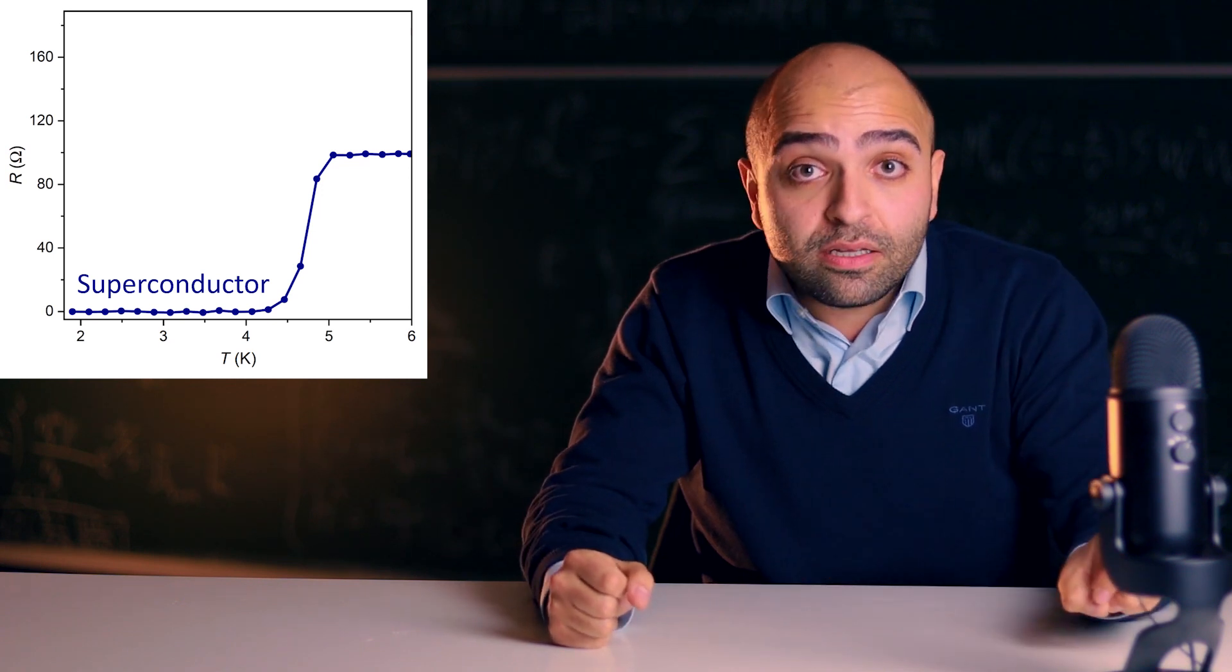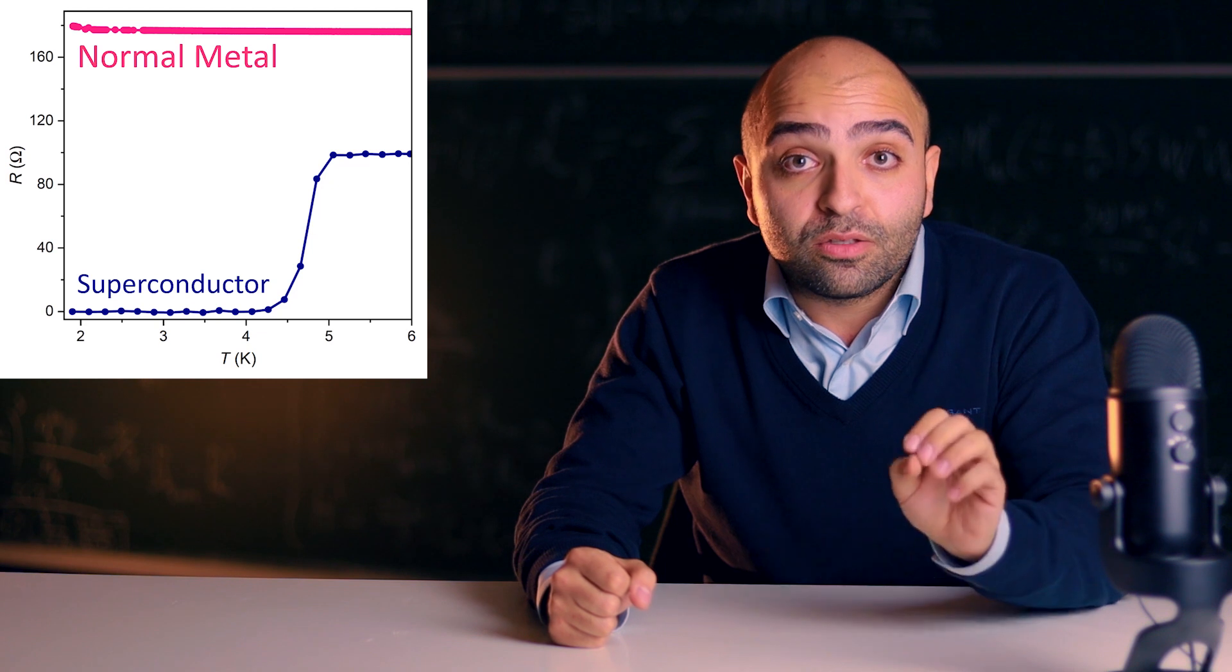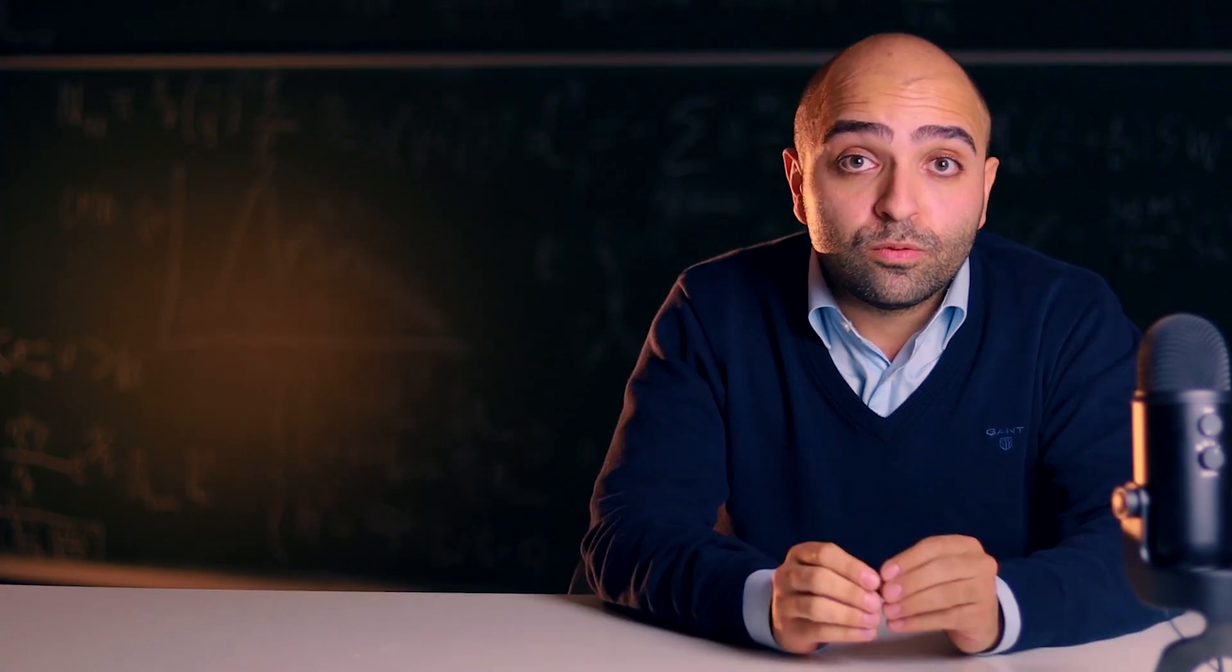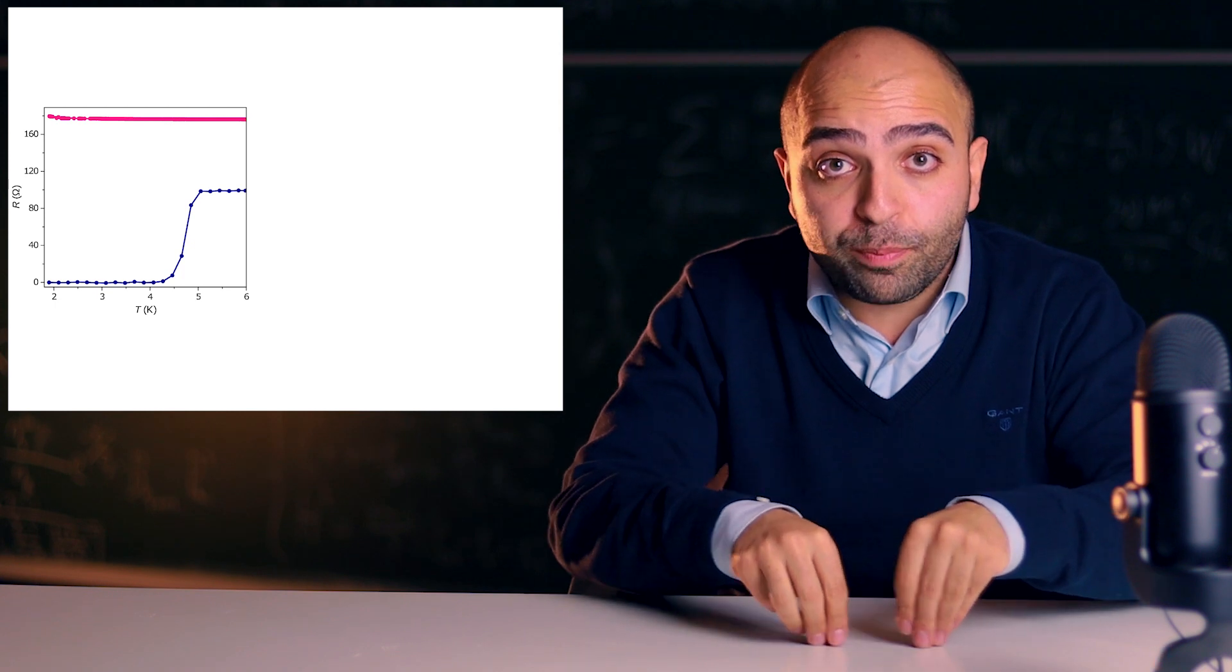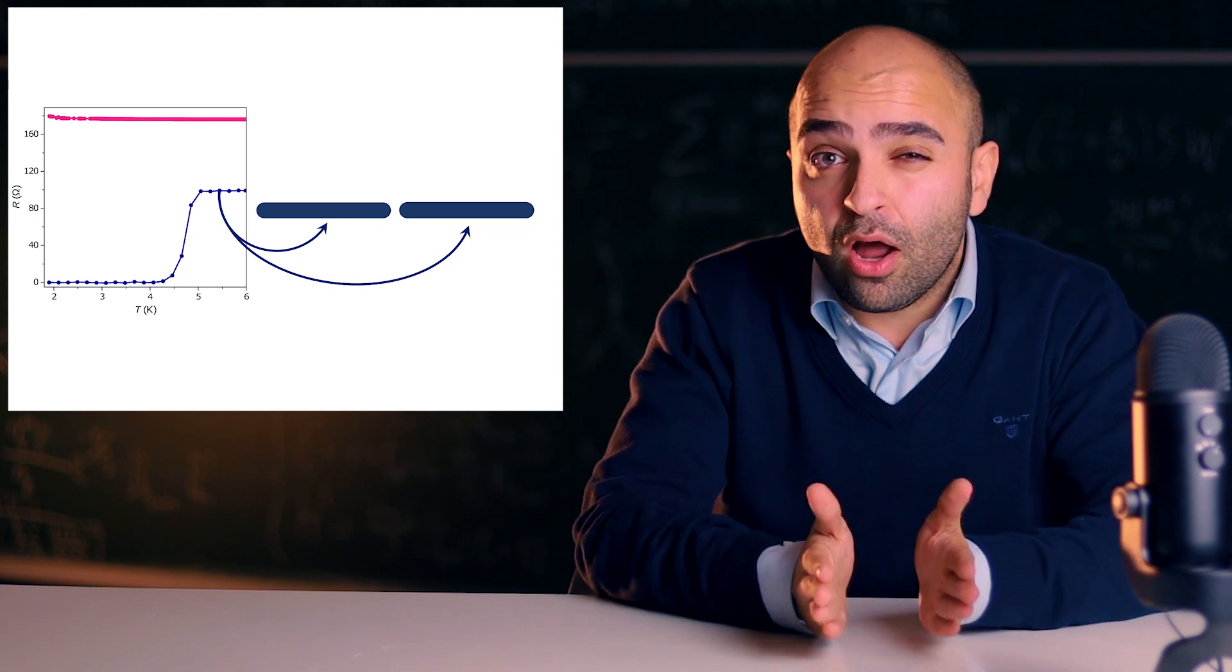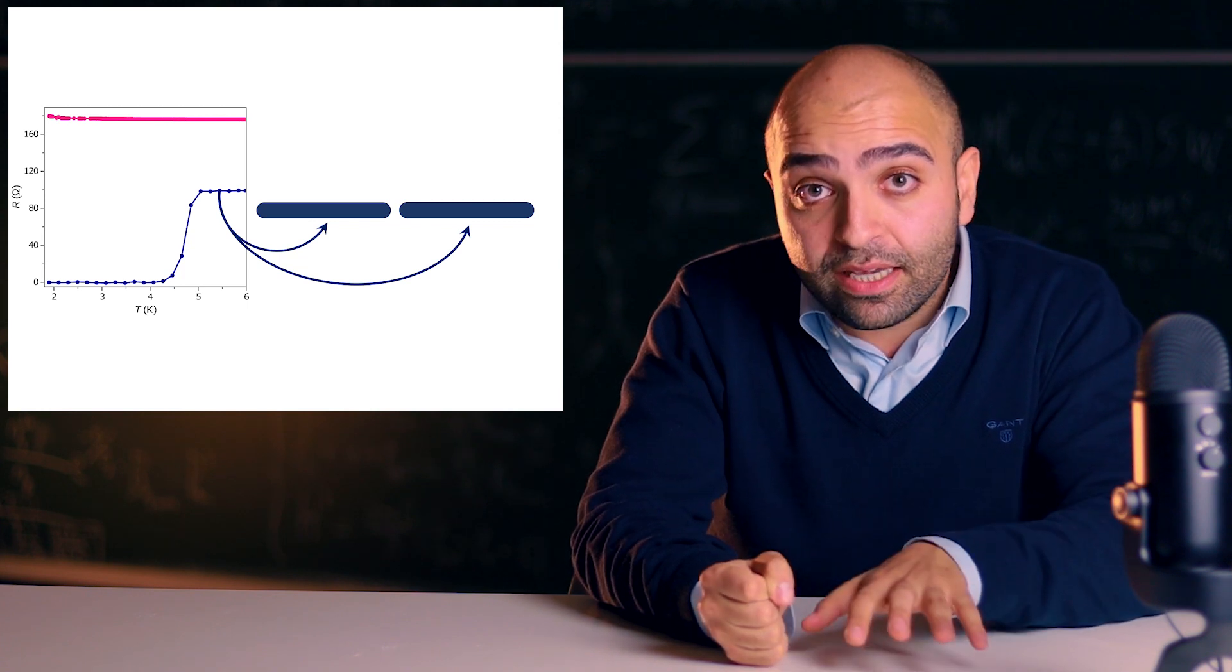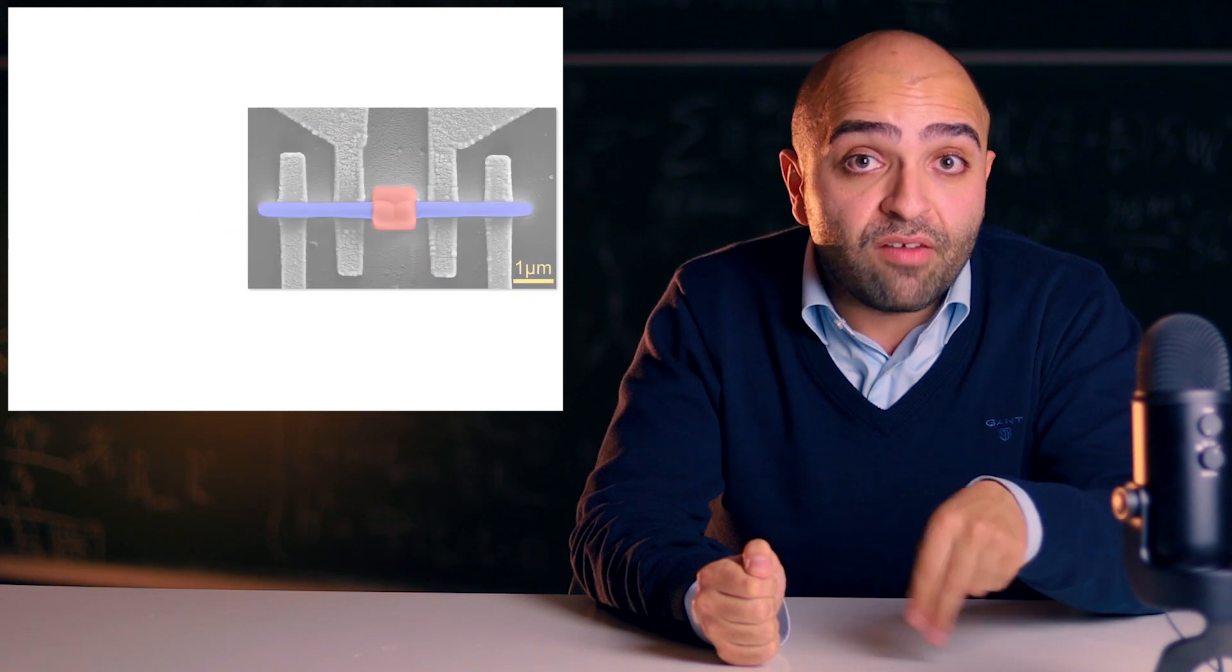And this provided us with the means to make our Josephson junctions. So this is how we did it. We first deposited two superconducting tungsten carbide wires, which are separated by about 150-160 nanometers. And then we connected them using a metallic tungsten carbide piece, which was deposited at a faster rate.